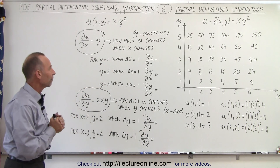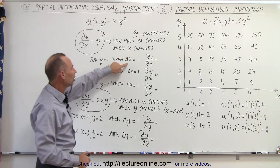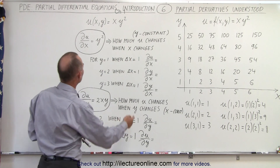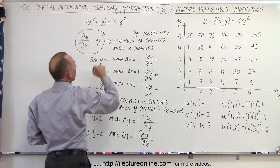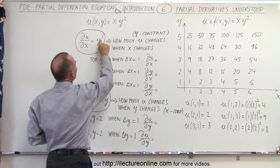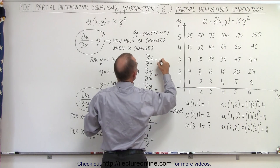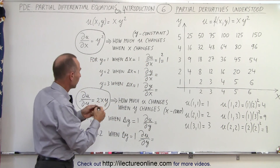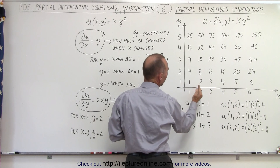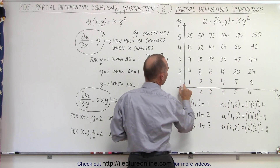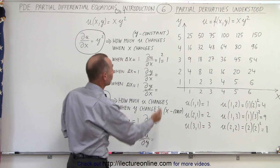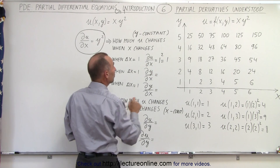So what happens when y equals 1 and we change x by 1? The partial of u with respect to x is y squared, and with y equal to 1, that's 1 squared, which equals 1. We can verify this on our table: with y equal to 1, going from x equals 1 to x equals 2, or from x equals 2 to x equals 3, the value of u changes by exactly 1 each time.